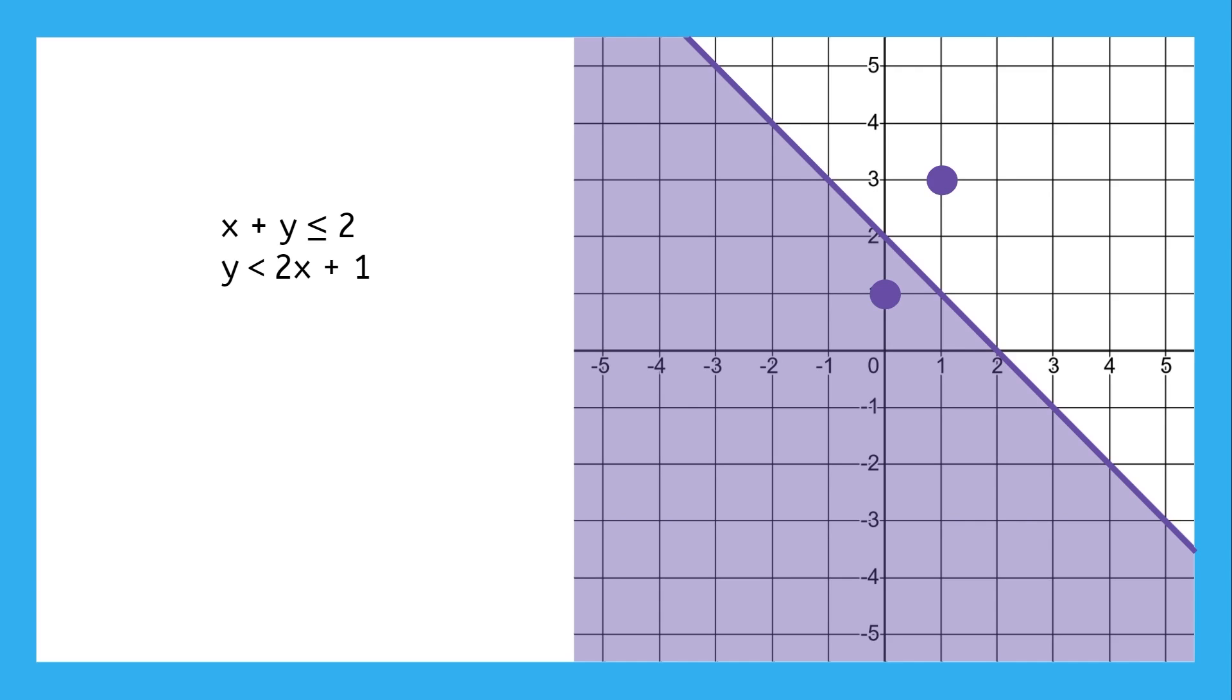The inequality is strict, not or equal to, so the line is dashed.